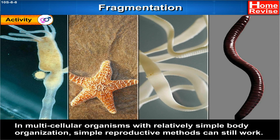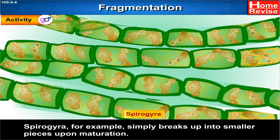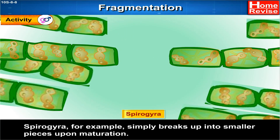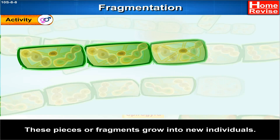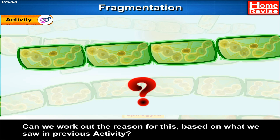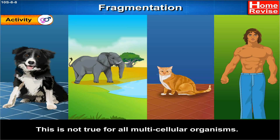In multicellular organisms with relatively simple body organization, simple reproductive methods can still work. Spirogyra, for example, simply breaks up into smaller pieces upon maturation. These pieces, or fragments, grow into new individuals. Can we work out the reason for this based on what we saw in the previous activity?